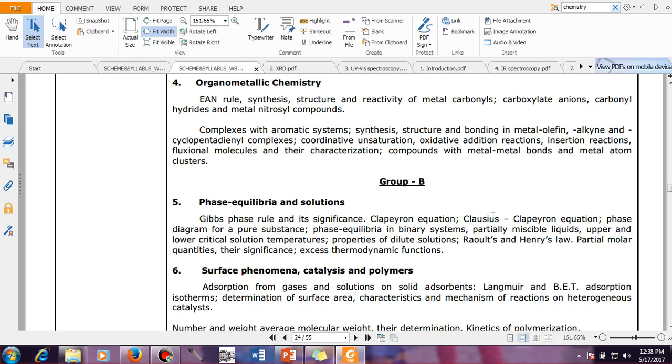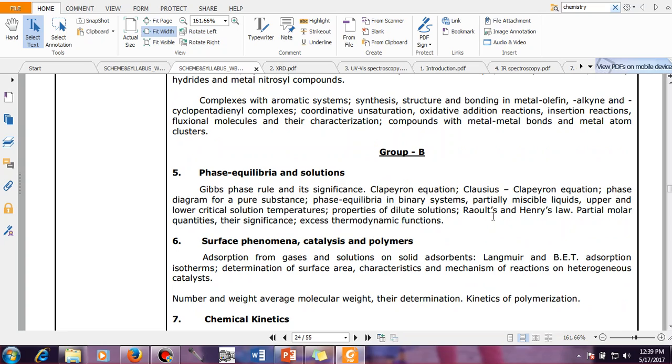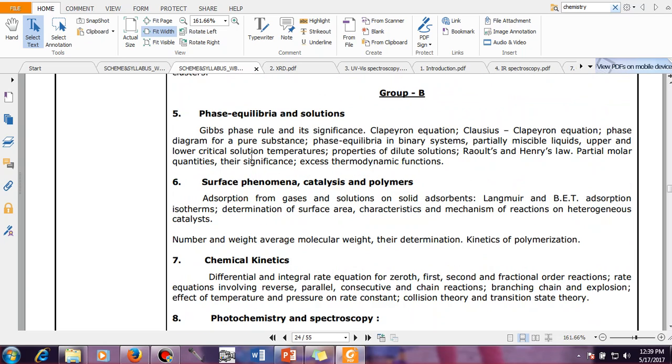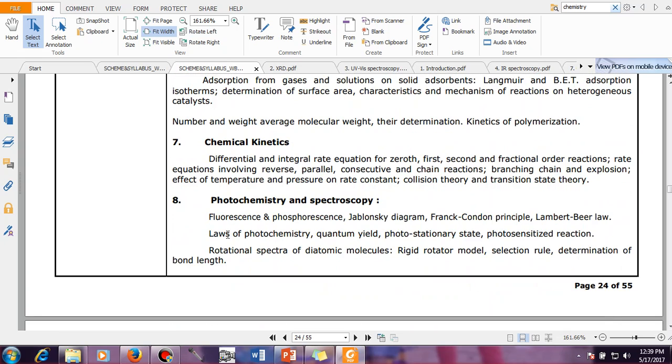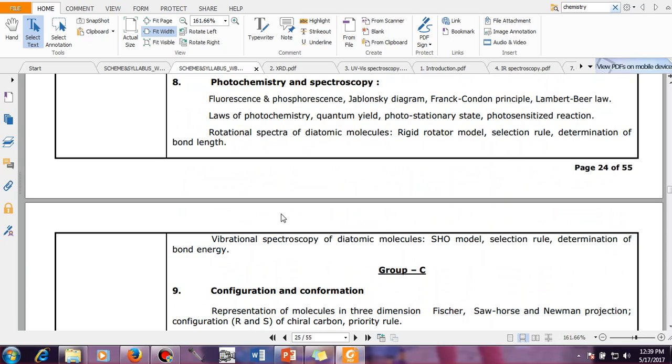In Group B you have things which are not so difficult because from your understanding you can solve problems. Phase equilibrium, solutions - those are more or less like mathematics. If you are good in mathematics then you can handle this. Surface phenomena, catalysis, and polymers, those are also important but very easy. Chemical kinetics is very much easy.